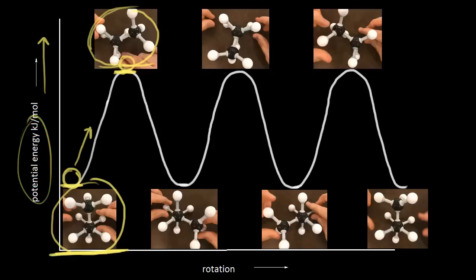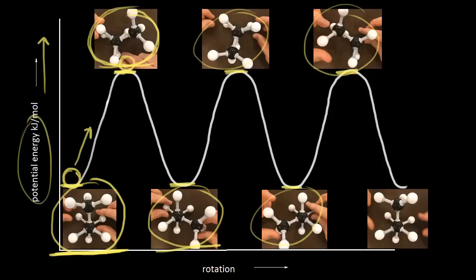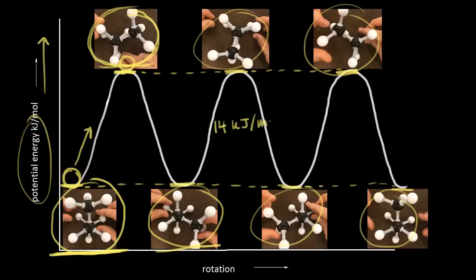As we rotate and go from the eclipsed conformation to the staggered conformation, that would be a decrease in potential energy. Going from staggered to eclipsed would be an increase, and going from eclipsed to staggered would be a decrease. You see the pattern. All of our eclipsed conformations have the same value for potential energy — they are degenerate in terms of energy. Same thing for the staggered conformations. The difference in potential energy between the eclipsed and staggered conformations turns out to be 14 kilojoules per mole.